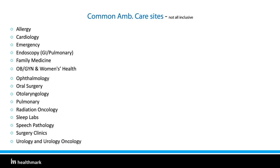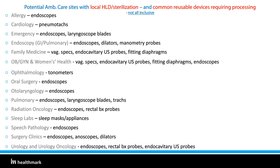Here's that same list, now also showing examples of reusable devices that require processing after use. Depending on the health system, it's not uncommon for some or all of these sites to manage processing themselves—for example, a urology or ENT clinic processing their own scopes, an opsy clinic processing their own tonometers, a sleep lab processing reusable masks, or any OB or primary care clinic processing their own endocavitary ultrasound probes. All sites also commonly use surgical instruments that require sterilization.